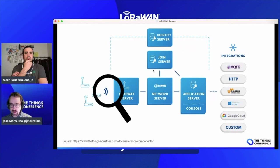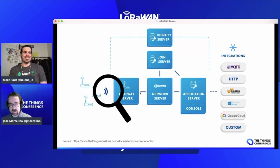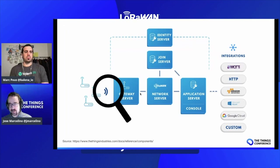We have a gateway server, which is the part that actually talks with the gateways over the internet. Gateways are not very smart — they just do whatever the gateway server tells them to do. So it's the gateway server's role to know when to send data, at the precise timings, and what data to send — how it's encoded, encrypted, et cetera. It's all done by the gateway server.